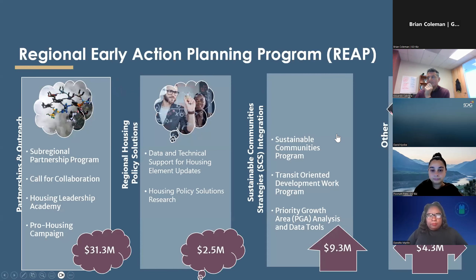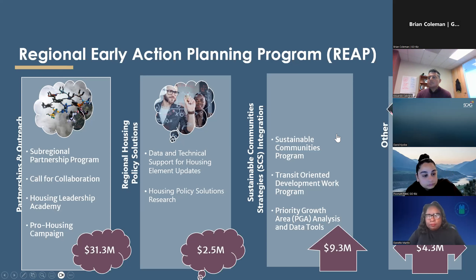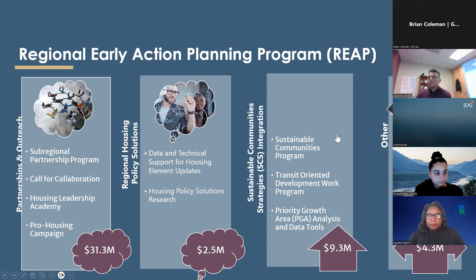SCAG was awarded $47 million in Regional Early Action Planning funding from Assembly Bill 101 for housing planning improvements and services to cities and counties. Funding was organized into four streams: Partnership and Outreach ($31M) for local councils of governments; Regional Housing Policy Solutions for housing research with universities like USC; Sustainable Community Strategy Integration ($9.3M) for transit-oriented development and EIFDs; and a fourth bucket for Regional Housing Needs Assessment work.